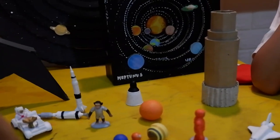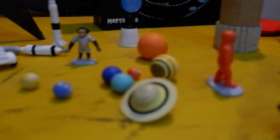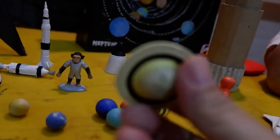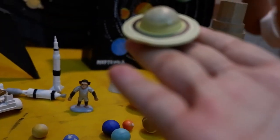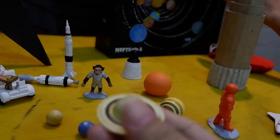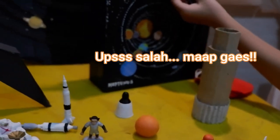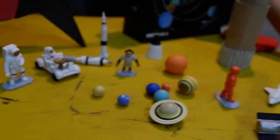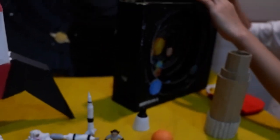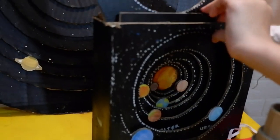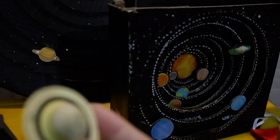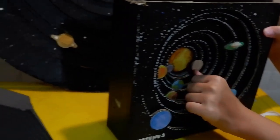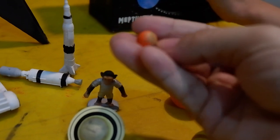Nah ini, teman-teman apal gak nama-nama planet? Kayak yang ini, ini apa nih? Ini Jupiter yang ada cincinnya. Nah, maaf, Saturnus namanya. Kalau Jupiter yang warna ini... oh maaf, saya juga tidak apa. Nah ini jadi namanya Saturnus, dia ada cincinnya.